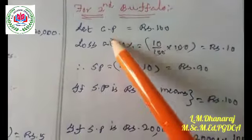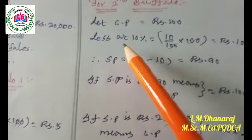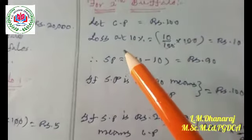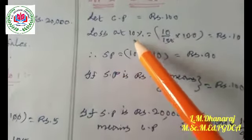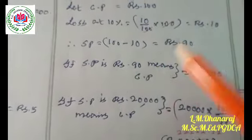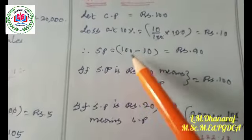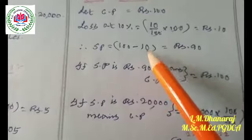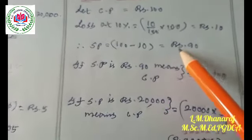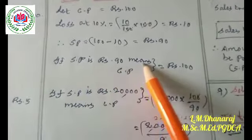For the second buffalo, let us consider the cost price as rupees 100, and it is sold at a loss of 10%. 10% loss means 10 divided by 100 into 100, so 100 can be cancelled, giving rupees 10 as the loss amount. Therefore, the selling price of the second buffalo is 100 minus 10, which is rupees 90.